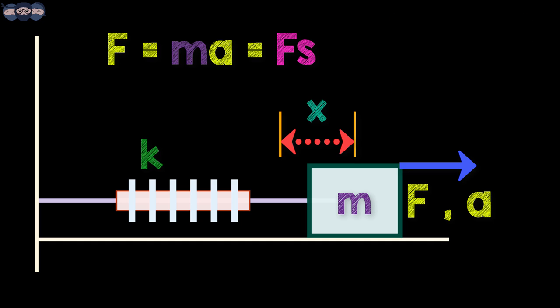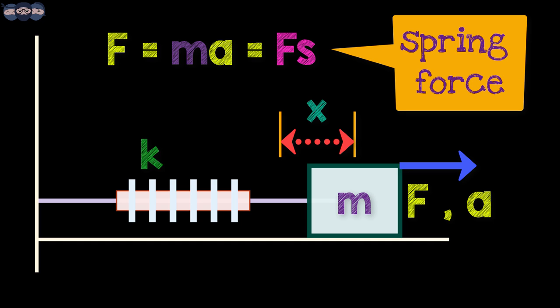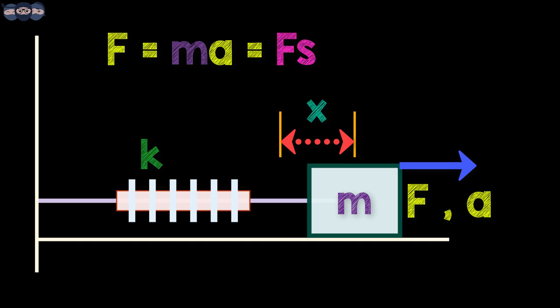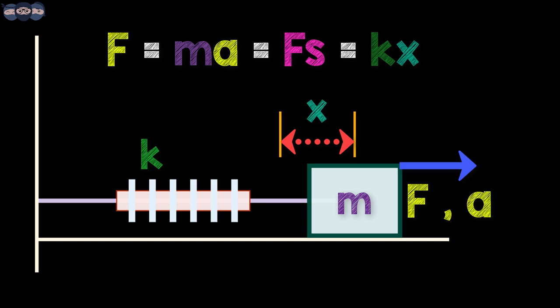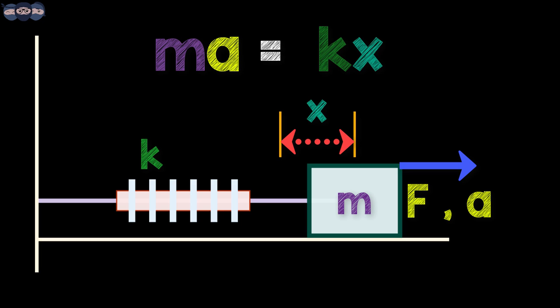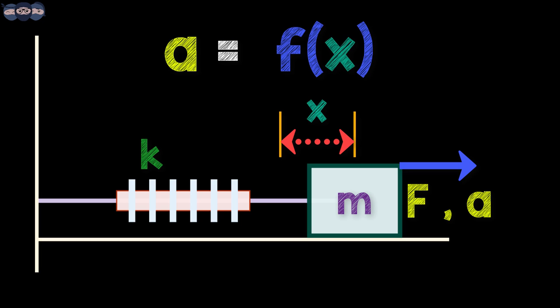This Fs is nothing but the force due to the spring tension. The force due to spring tension is written as kx where x is the displacement of the body from initial rest position. Equating the forces, we get MA equals kx. Thus, we see that acceleration is a function of displacement that is A equals F.